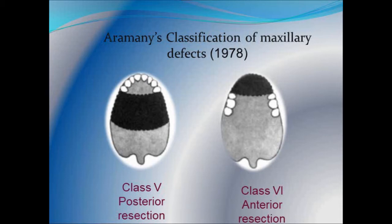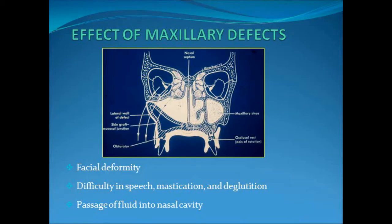This is Aramani's classification of maxillary defect, proposed in 1978. Coming to the effects of maxillary defects: the maxillary defect may lead to anatomical and functional deformity of the maxillofacial region. The anatomical defect can make the oral cavity, the maxillary sinus, and the nasal cavity become a single confluent chamber. The lack of anatomical boundaries can create difficulty in speech, mastication, and deglutition. Speech becomes unintelligible because of hypernasality — that is, air flows through the nose while speaking, affecting the sound of the voice.